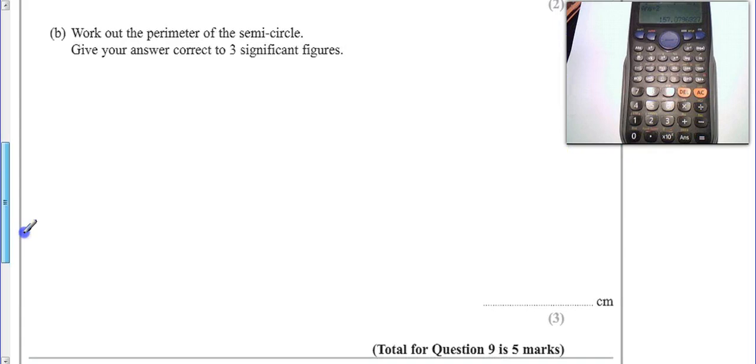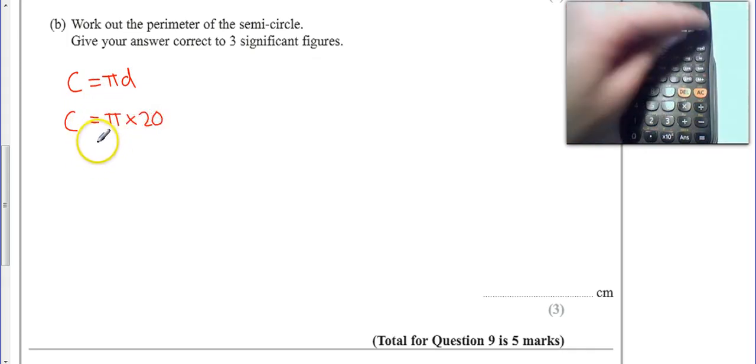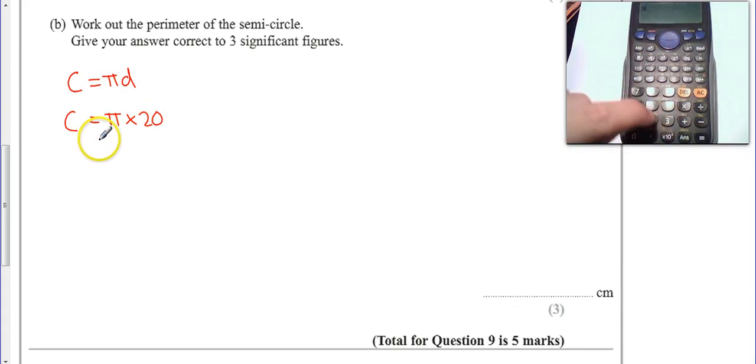So a very similar process. Circumference is pi times the diameter. So the full circumference is pi times 20, which is obviously going to come out as 20 pi.